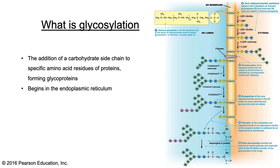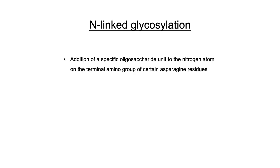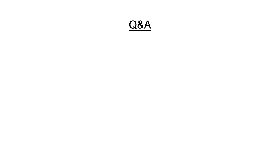Transfer of the completed core oligosaccharide to an asparagine residue of the recipient protein is catalyzed by an oligosaccharyl transferase. Finally, certain glucose and mannose units are removed in the ER before transfer of the glycoprotein to the Golgi. This is a very complicated process with many steps. There are two types of glycosylation discussed in the textbook. The first is N-linked glycosylation, which is the addition of a specific oligosaccharide unit to the nitrogen atom on the terminal amino group of certain asparagine residues.